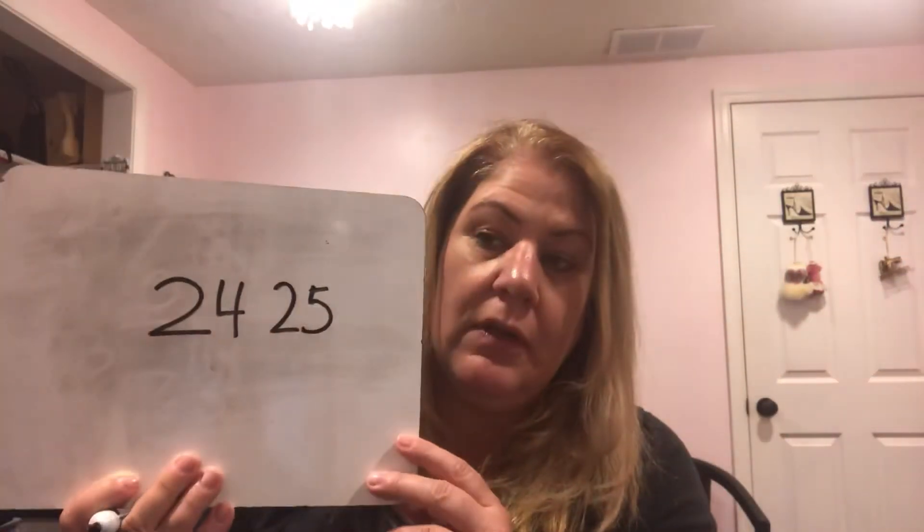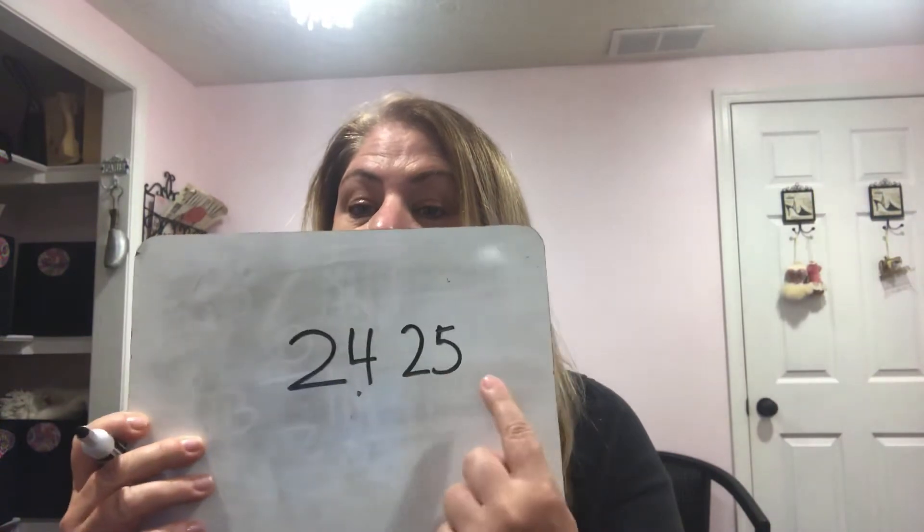We're going to fill these in imagining this is on a hundred grid. What is one more than 24? I wrote 25 — one more, the ones place went up by one. It was a four and now with one more in the ones place it's five. So 24 plus one is 25 — that's our plus one.